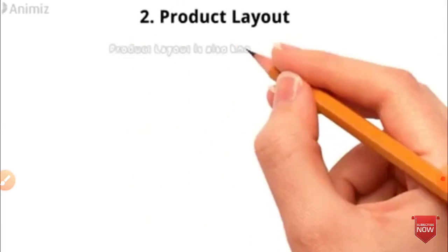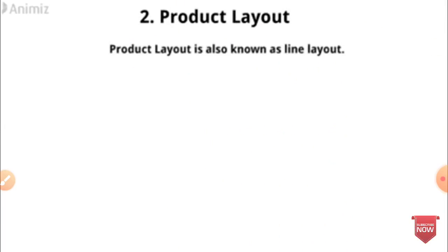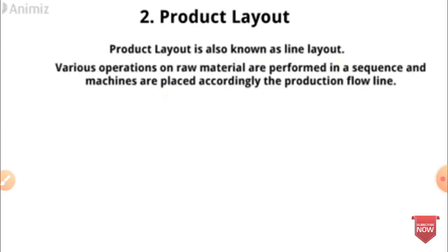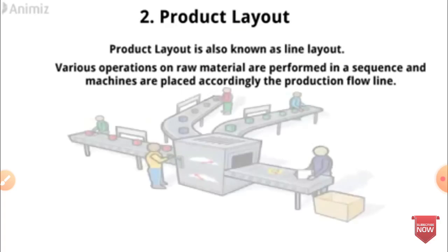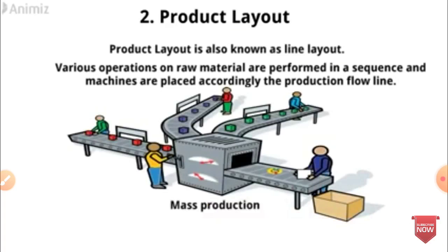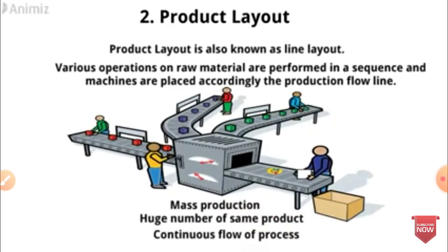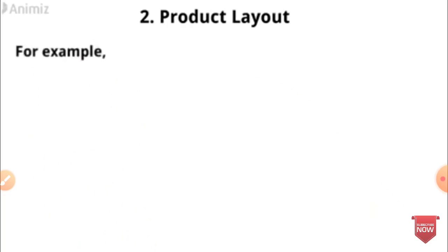The second type of layout is Product Layout, also known as Line Layout. Various operations on raw material are performed in sequence and machines are placed according to the production flow line. It is used for mass production with continuous flow of process.